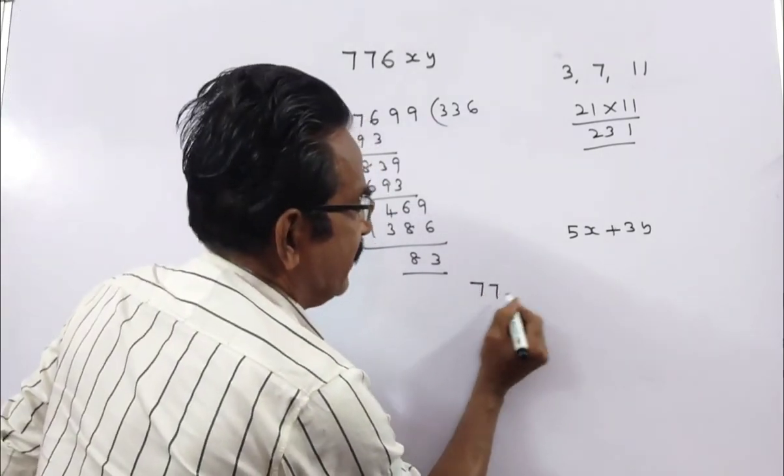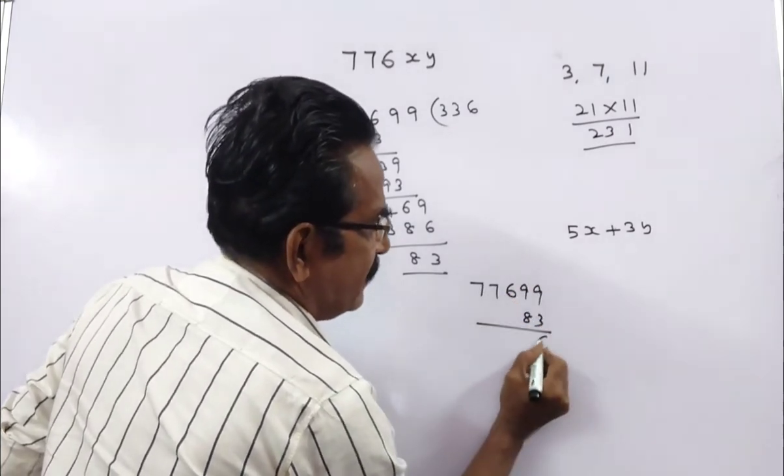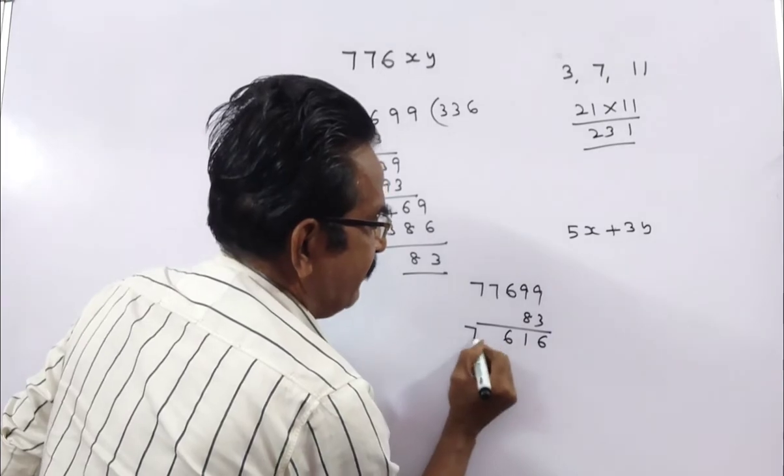Let us see that number. 77699 minus 83, 6, 1, 6, 77.